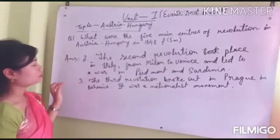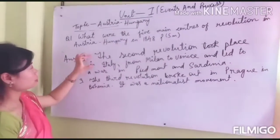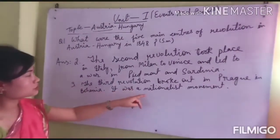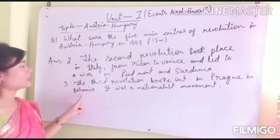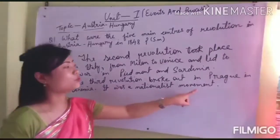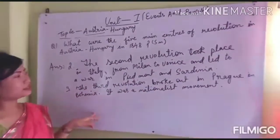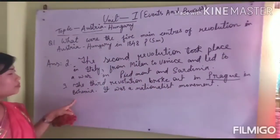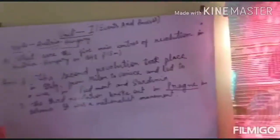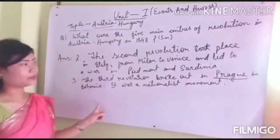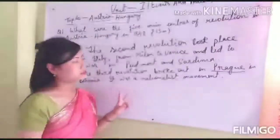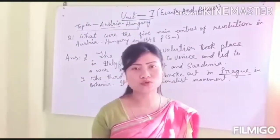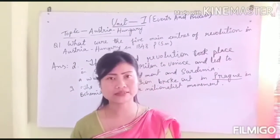The third revolution broke out in Prague in Bohemia. It was a nationalist movement. This revolution was mostly anti-Austrian and anti-German nationalists.